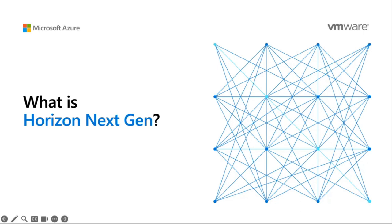First, I would just like to preface this presentation by saying Horizon Next Gen is just another way of saying version 2 of Horizon Cloud on Azure. It is, and I repeat, it's just not a version 1.2 of the previous Horizon Cloud on Azure. It is built from the bottom up, harnessing some of the lessons learned from version 1. And now that we're all up to speed, let's go ahead and jump in.